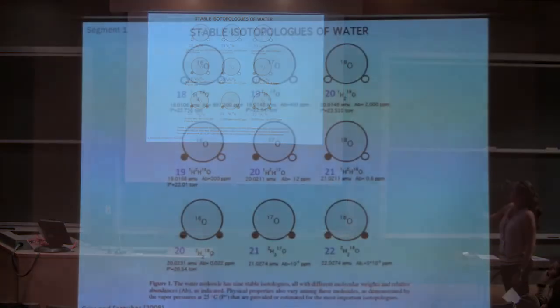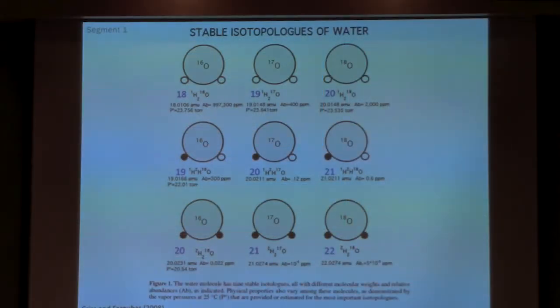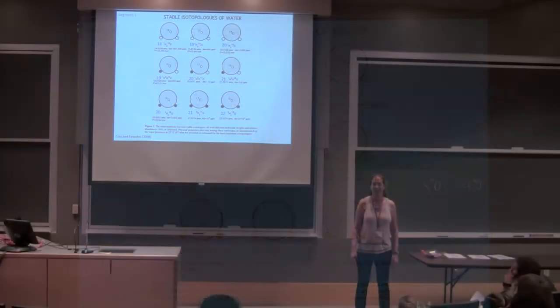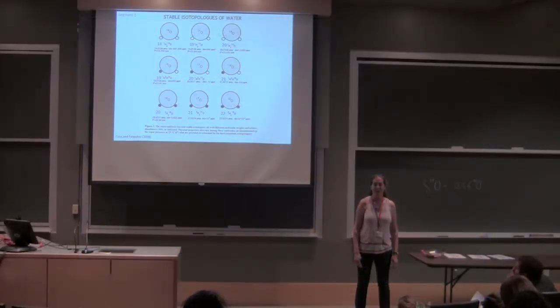You can be looking through all the different possible combinations and then also how abundant they are. And what I want you guys to do next is decide in your own personal space what molecule you work with, and think about how many different isotopologues there are in your system. Just write them down.